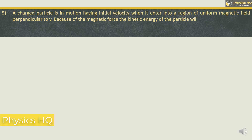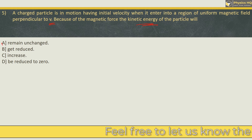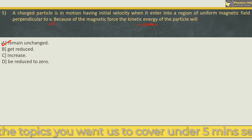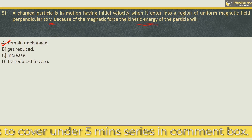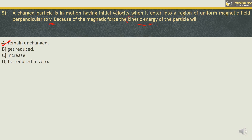A charged particle in motion with initial velocity enters a region of uniform magnetic field perpendicular to V. Because of the magnetic force, the kinetic energy of the particle will remain unchanged. The correct option is option A. Whenever a charged particle moves into a uniform magnetic field, the direction of motion might change — changing the direction of velocity — but the magnitude of velocity remains the same. Therefore kinetic energy, given by half MV square, remains the same.